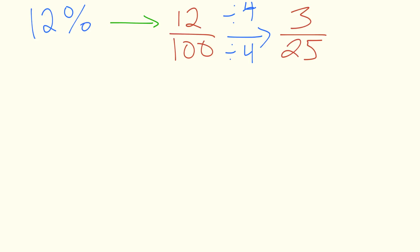Now how do we convert this to a decimal? In a previous video we discussed converting fractions with powers of tens as denominators to decimals. You can take a look at that video and you would find that 12% as a decimal is 0.12. That's how you convert percents to decimals and fractions.